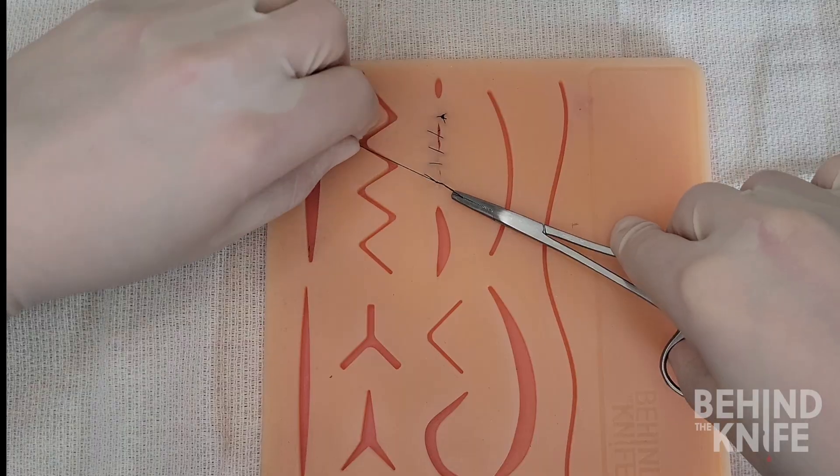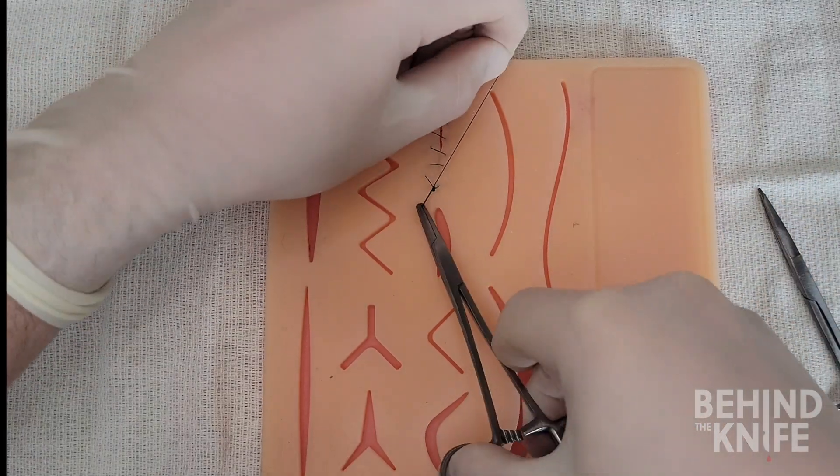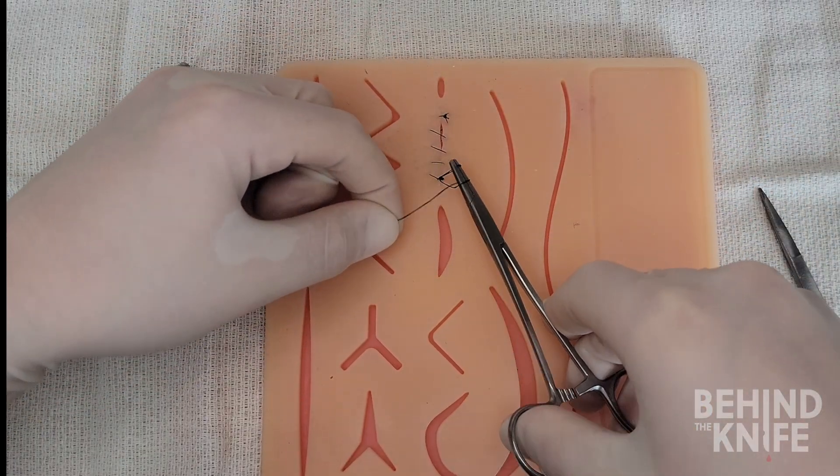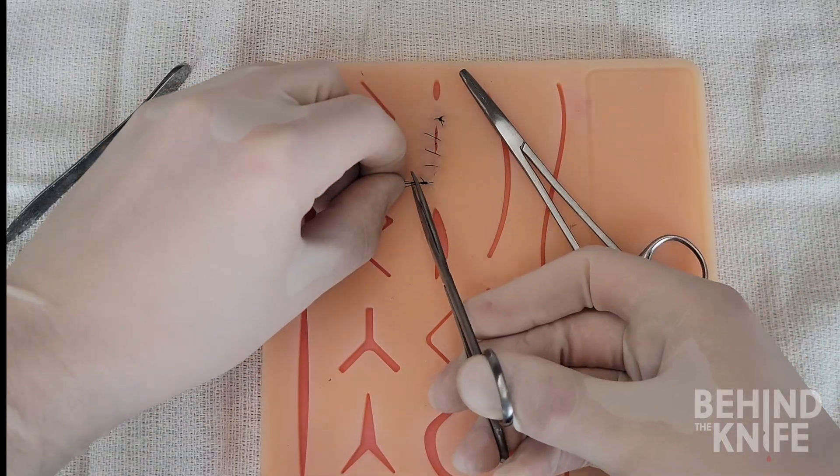The suture can then be instrument tied using the loop which will act as the short tail. Once you cut the suture here you've completed a simple interrupted suture.